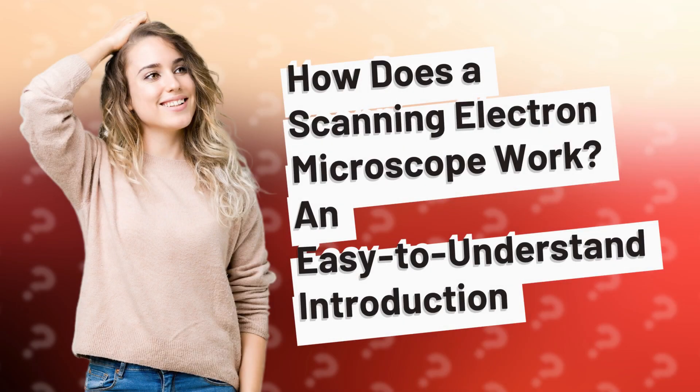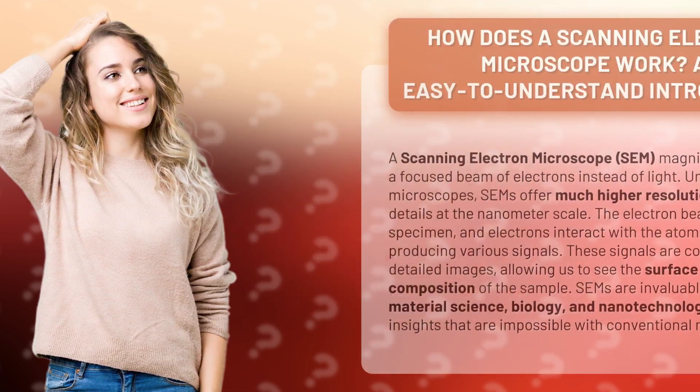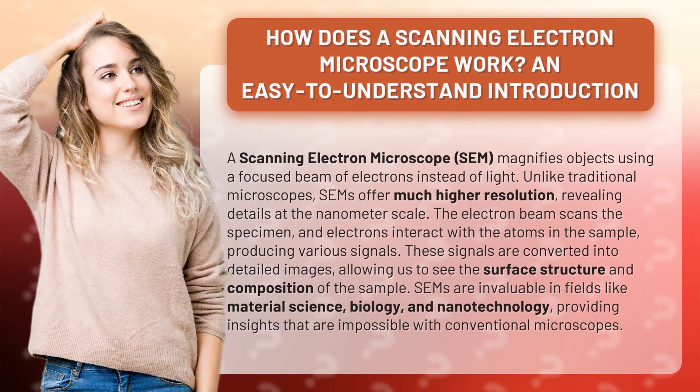How does a scanning electron microscope work? An easy to understand introduction. A scanning electron microscope, or SEM, magnifies objects using a focused beam of electrons instead of light. Unlike traditional microscopes, SEMs offer much higher resolution, revealing details at the nanometer scale. The electron beam scans the specimen and electrons interact with the atoms in the sample.